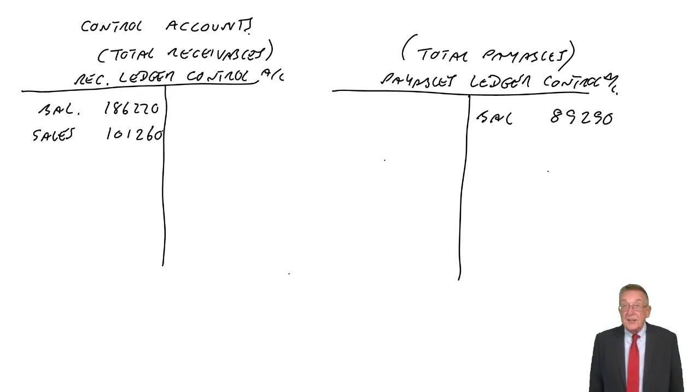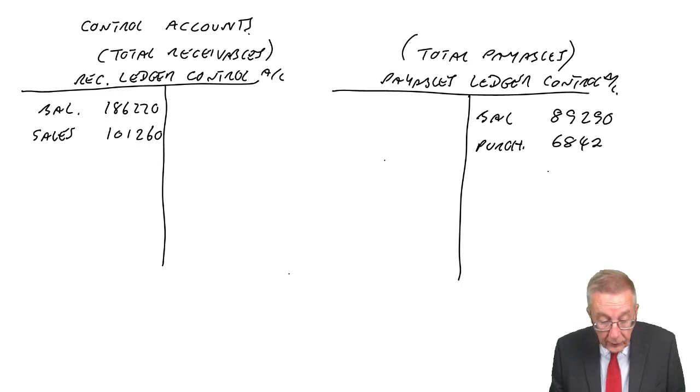Next one, credit purchases, another way of saying purchases on credit. Surely if you buy goods on credit, debit purchases, credit payables. 68,420.